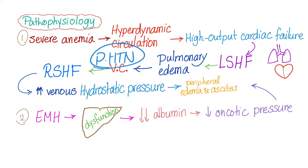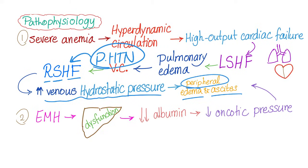The pulmonary hypertension will lead to right-sided heart failure. Right-sided heart failure leads to venous increased hydrostatic pressure, which leads to accumulation of fluid — edema and ascites — peripheral rather than pulmonary. So left side of the heart leads to pulmonary edema; right side of the heart leads to peripheral edema.